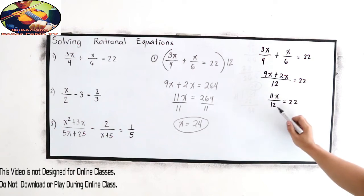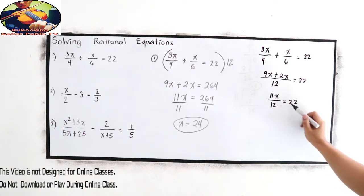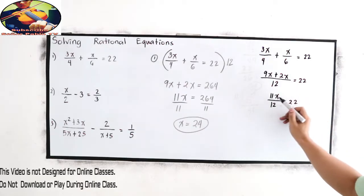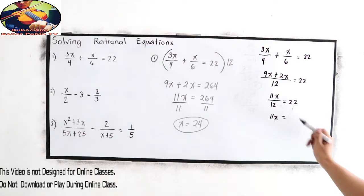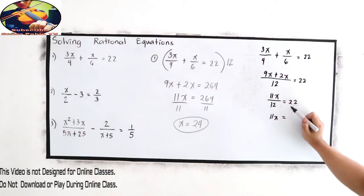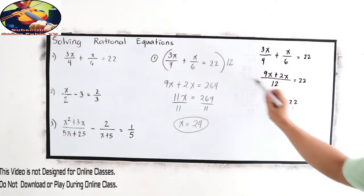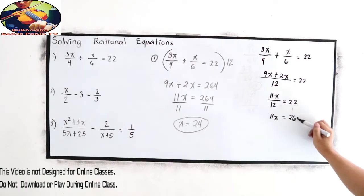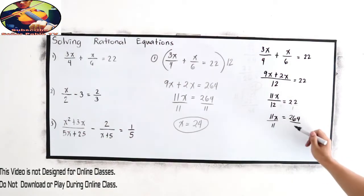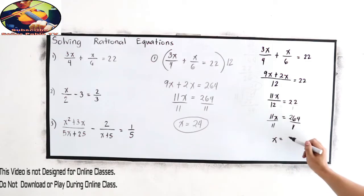Now cross multiply. We know that 22 has a denominator of 1, so 11x times 1 equals 12 times 22. 12 times 22 is 264. Divide by 11, and x is equal to 24.